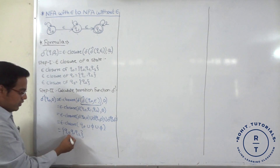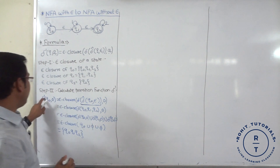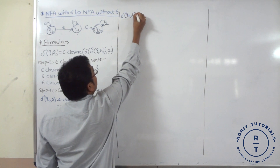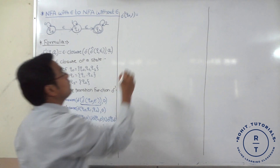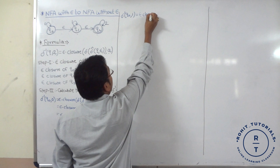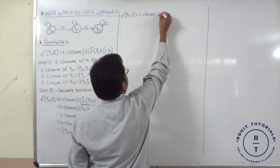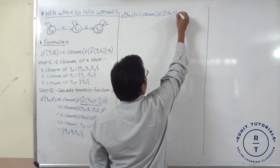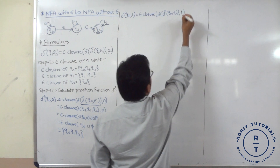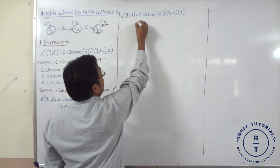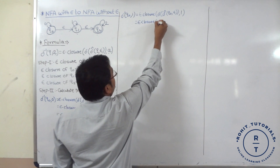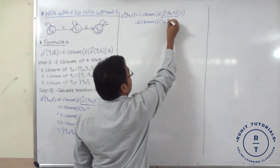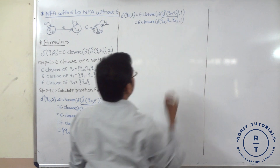Next, delta dash of Q0 with input 1. Applying the formula: epsilon closure of delta cap of Q0 with epsilon, then input symbol 1. Epsilon closure of Q0 is {Q0, Q1, Q2}, so we separate and compute delta(Q0, 1), delta(Q1, 1), delta(Q2, 1) with input 1.